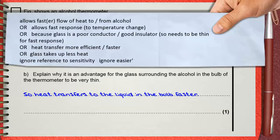Any reference to sensitivity will be ignored, because sensitivity isn't how fast the thermometer responds to temperature changes—sensitivity is the spacing between the degrees, whatever the time of response is. Also, the word 'easier' will be ignored because it does not give any scientific explanation.